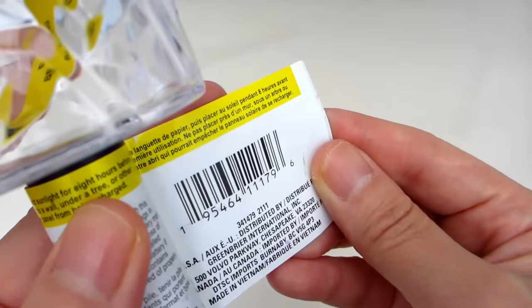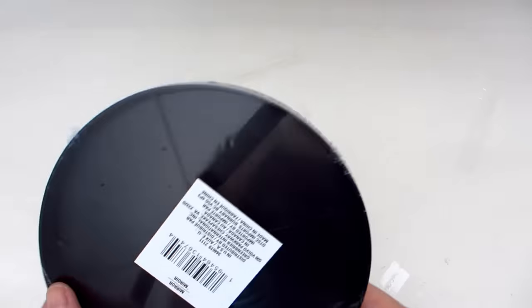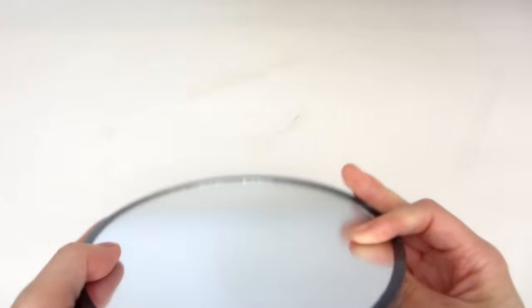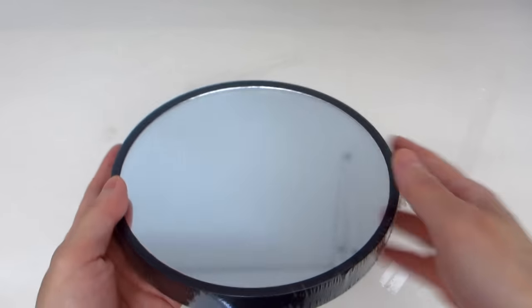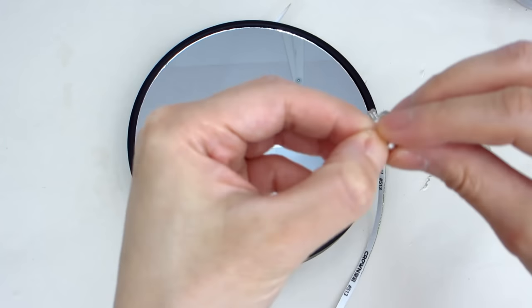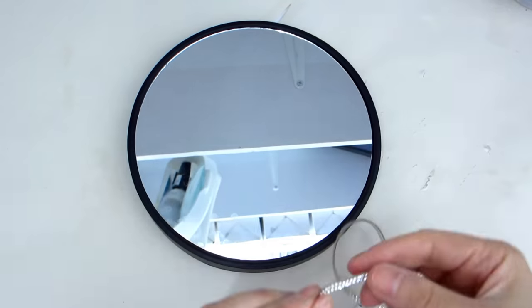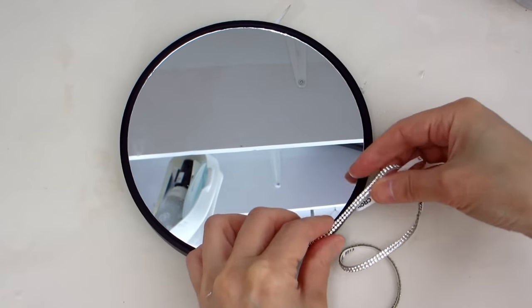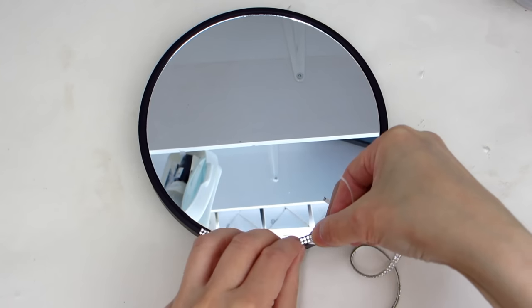To begin we're going to take this round black framed mirror I found at the Dollar Tree and embellish it with some rhinestone ribbon. This ribbon is self-adhesive so no glue will be required. I love crafting with this rhinestone ribbon because it is so beautiful when the light hits it and it is very flexible and can be cut to size.